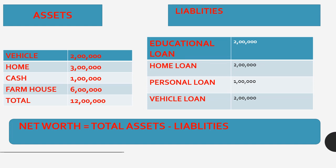The first thing we discuss is assets. Let's discuss what assets are. For example, you have a vehicle worth 2,000,000 rupees and a house worth 3,000,000 rupees. I'm using this as an example just for understanding.